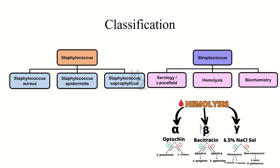Gamma hemolytic bacteria are subdivided on the basis of growth in 6.5% salt solution. If a bacterium grows in that solution, it is enterococci, further classified into enterococcus faecalis and enterococcus faecium. If a bacterium does not grow in 6.5% salt solution, it is non-enterococci — strep gallolyticus, formerly called strep bovis.